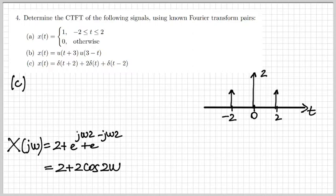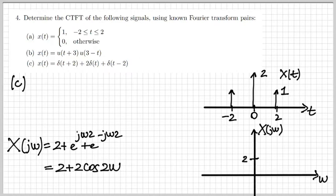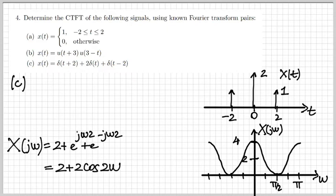The signal x(t) consists of three impulses: one centered at minus two, one centered at plus two, and one centered at the origin with double amplitude. The Fourier transform is 2 + 2cos(2ω), which oscillates between zero and four — a vertical shift of two with cosine amplitude two.